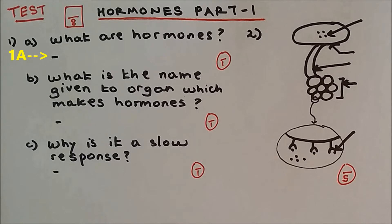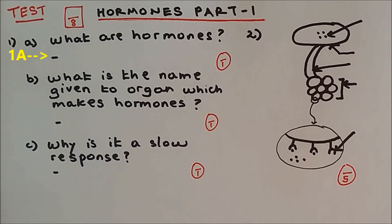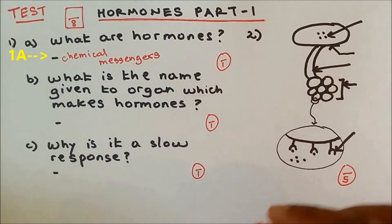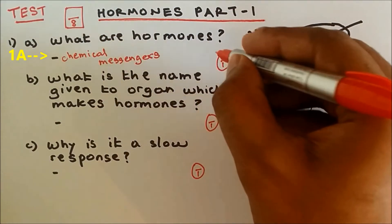Question number 1A. What are hormones? Hormones are chemical messengers. We got it right. One out of one. Well done.